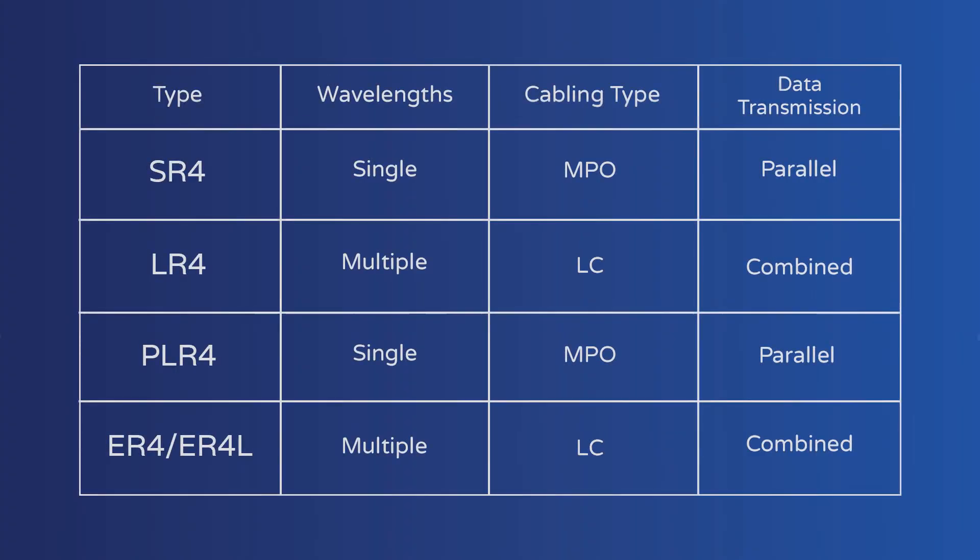These four channels can either be used in parallel, similar to the four lanes on each side of a highway, or internally combined, sent, and then internally separated by each transceiver.